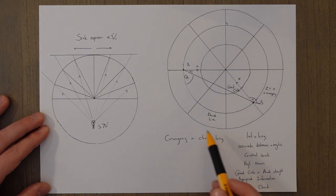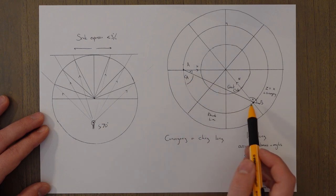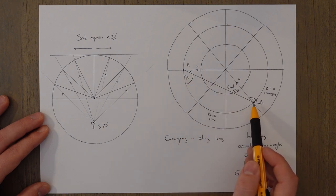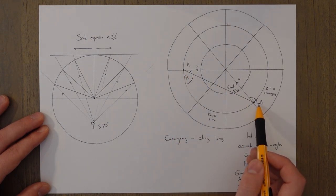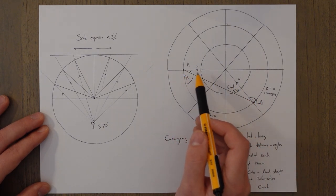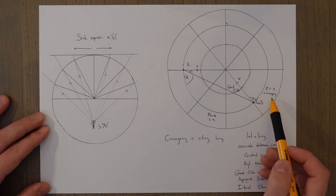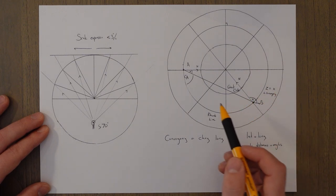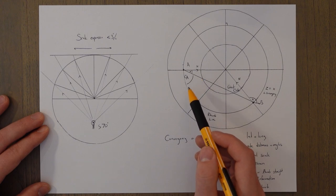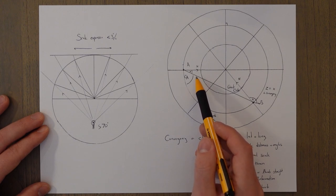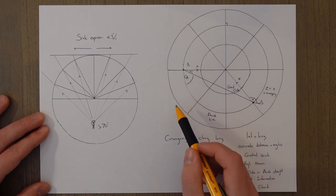We can use the convergency calculated earlier to find the change in great circle direction: the angle at B equals the angle at A plus the convergency. Taking half of that convergency gives us the difference in angle between the great circle and the rhumb line.